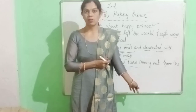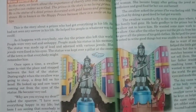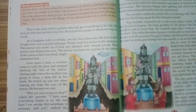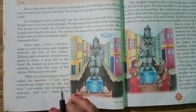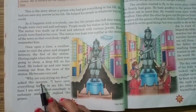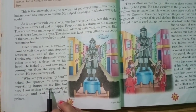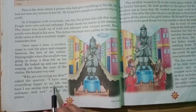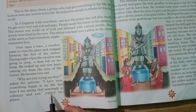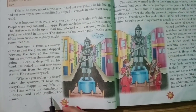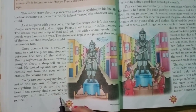So dear kids, let's continue. We have read one page of this lesson, Happy Prince. When the swallow was asking the prince why he was crying, the prince said ki woh kisiko bhaut hi jyada unhappy or sad dhek raha hai. Or usi ke wajay se woh bhi bhaut hi jyada sad hai.